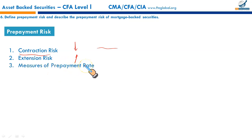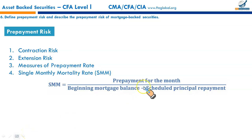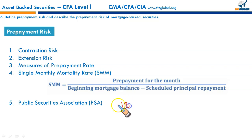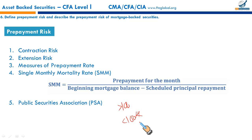The prepayment rate is measured using the Single Monthly Mortality (SMM) rate, calculated as prepayments for the month divided by the beginning mortgage balance minus scheduled principal repayment. The Public Securities Association (PSA) provides a standard prepayment benchmark. A PSA above 100 means prepayments are faster than the standard model; a PSA below 100 means prepayments are slower than the standard model.